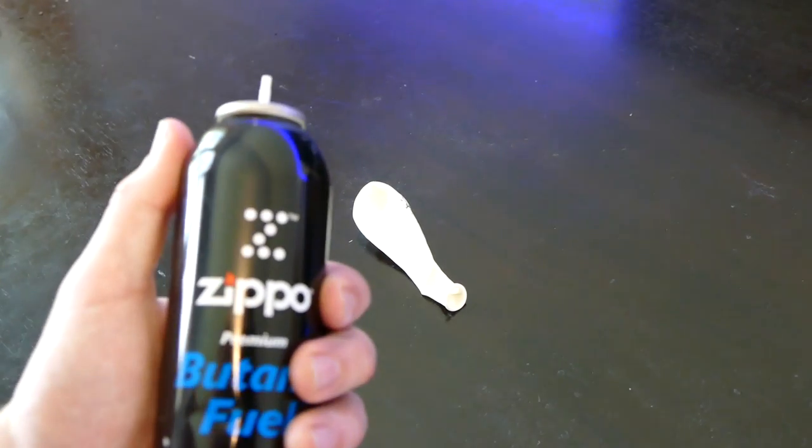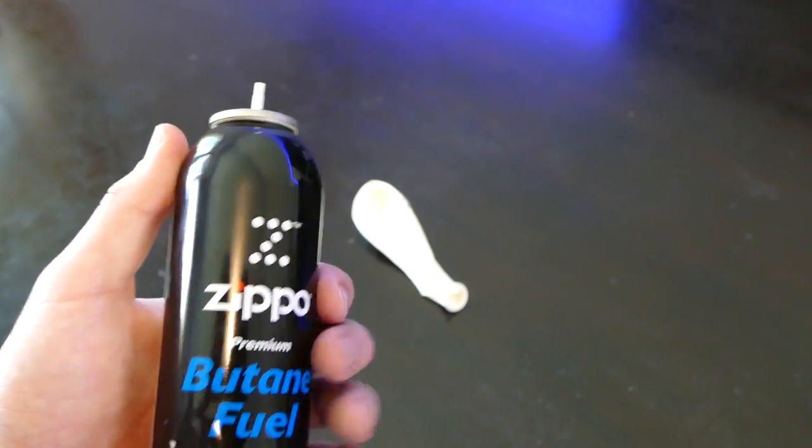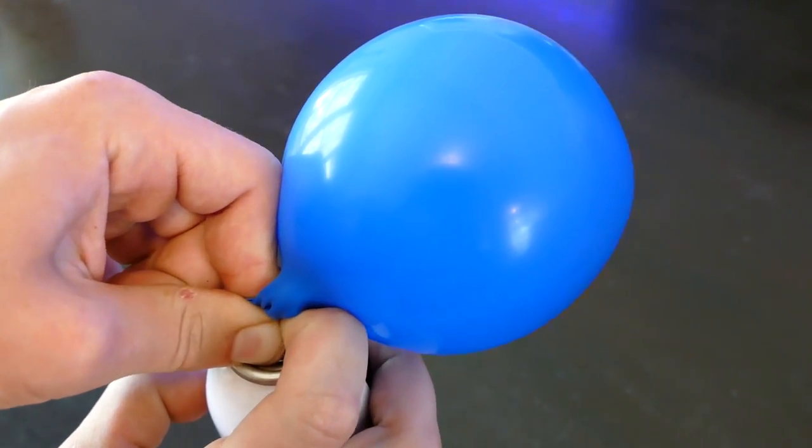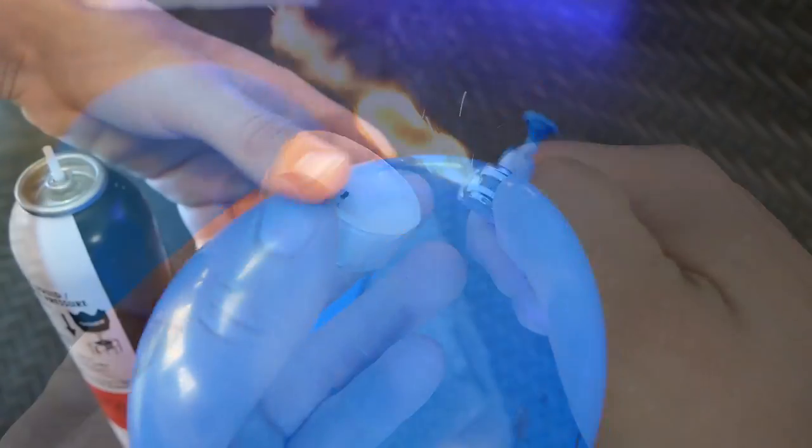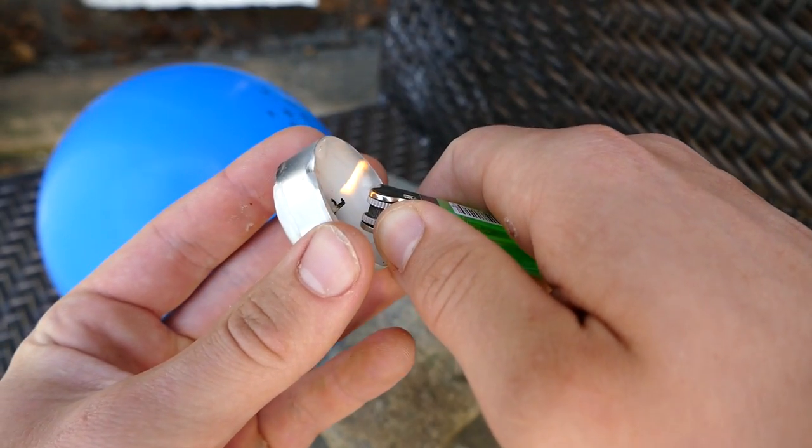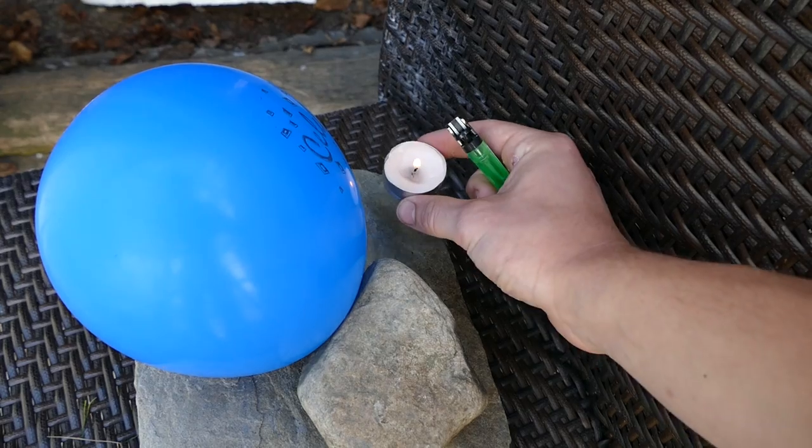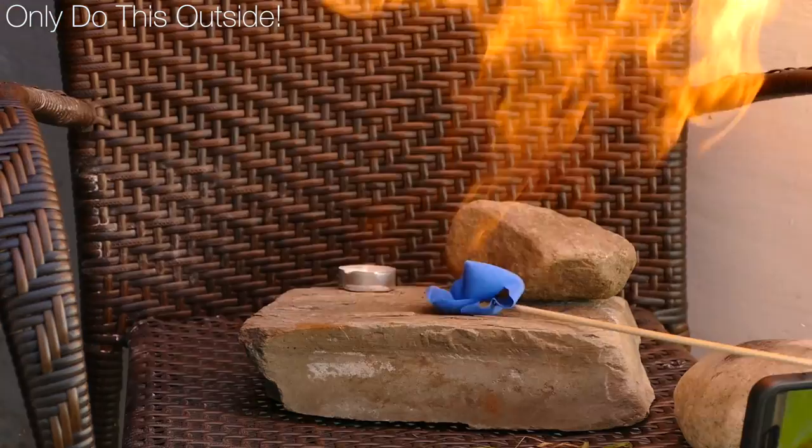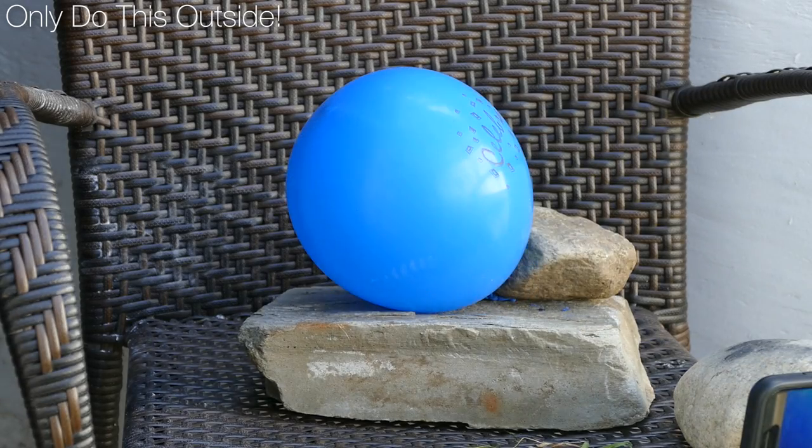Next for the more exciting and dangerous method grab some butane and fill up a balloon with it like this. Now place a candle right behind it. Not too close so that it pops it but just close enough. When the balloon pops the candle will light the gas and we have an awesome exploding target.